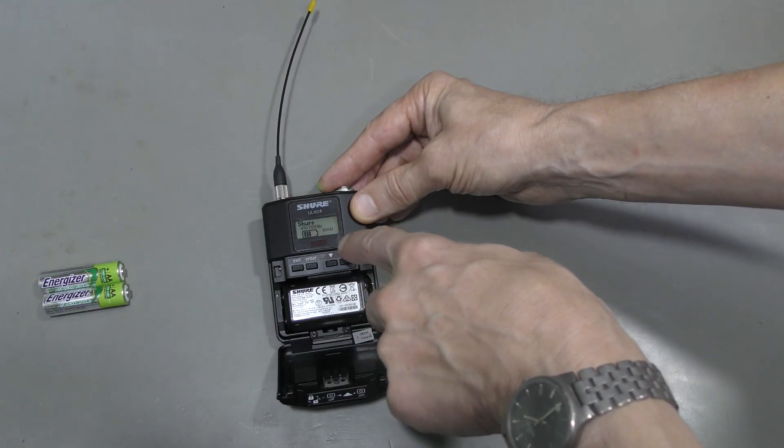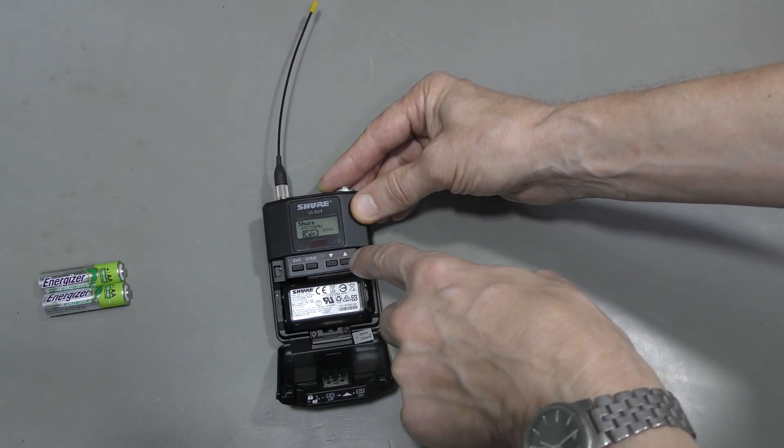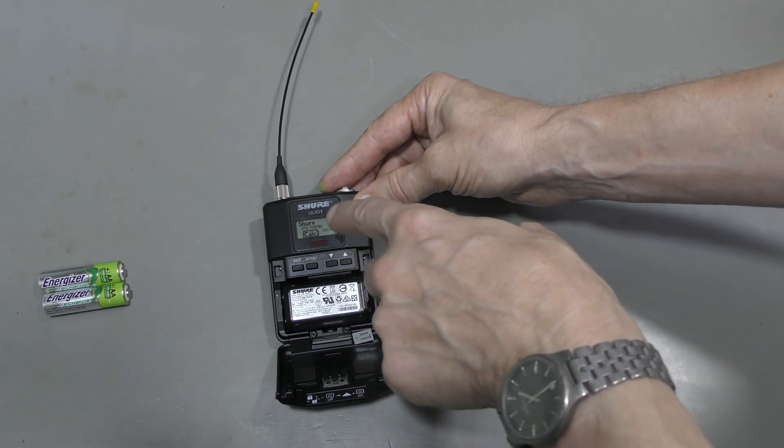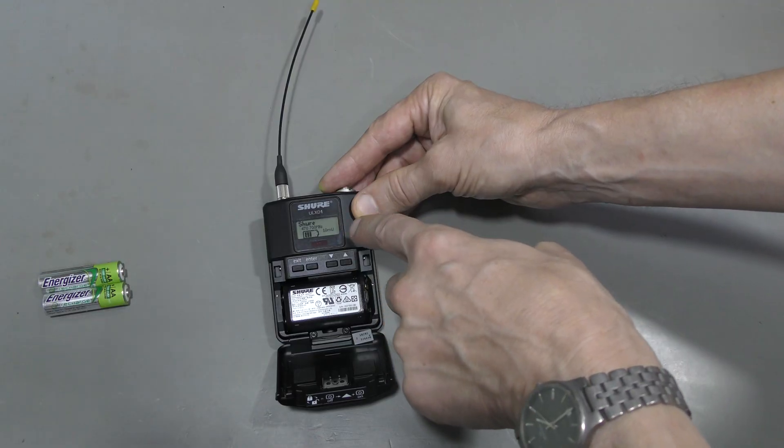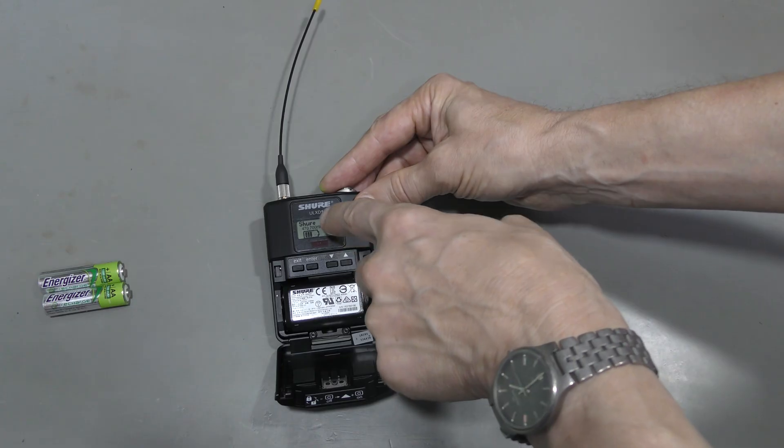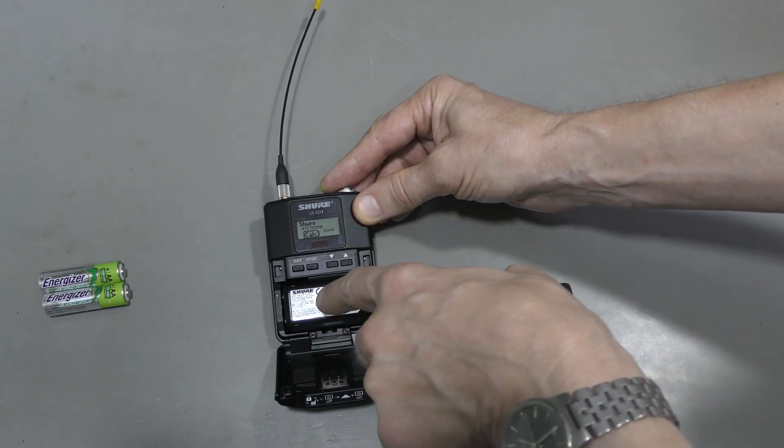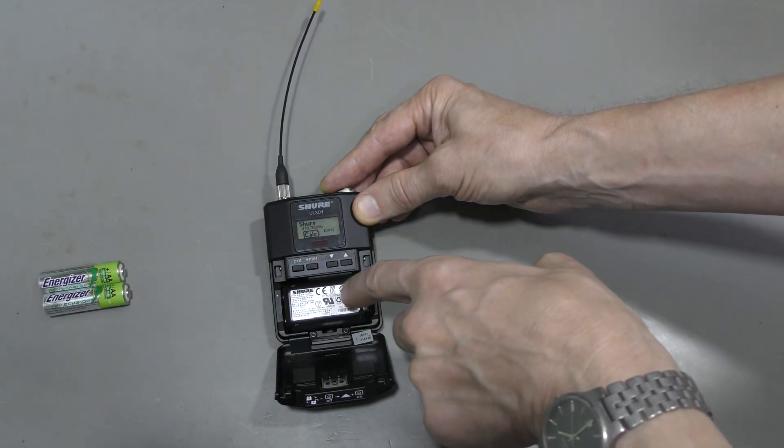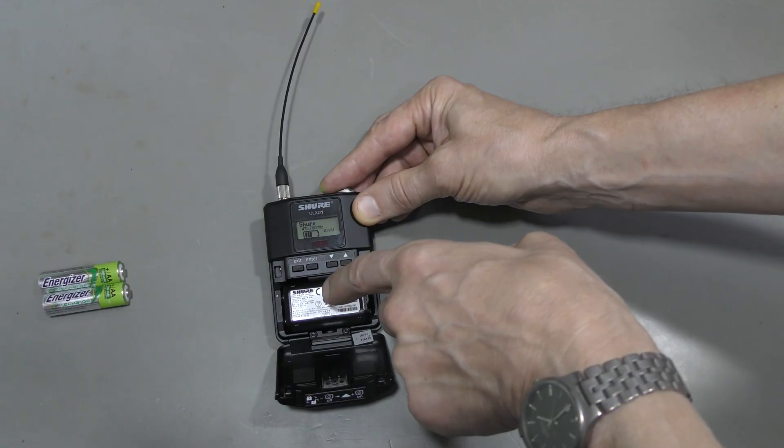I believe it measures the current consumption, which depends on the transmitter's settings. This transmitter has three settings: 20mW, 10mW, which is the current one, and 1mW. And these batteries also last longer than AA's. Perhaps more than 10 hours, at least on the low setting.